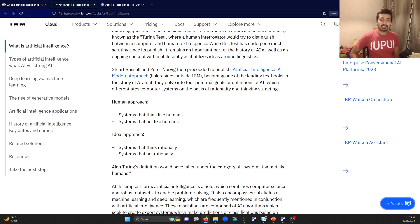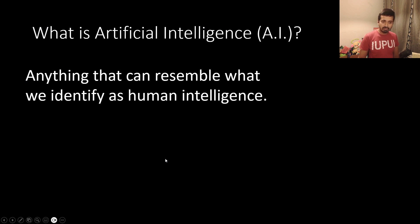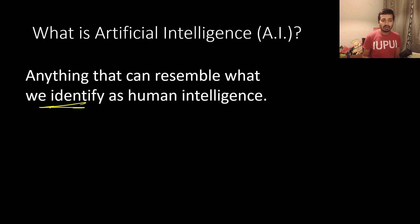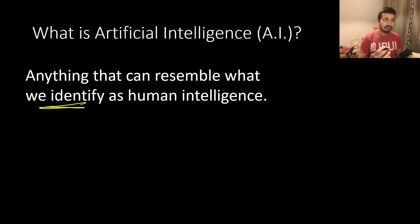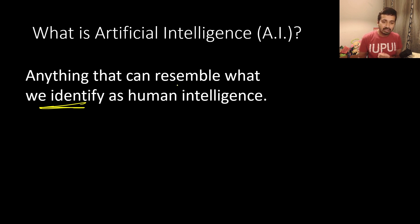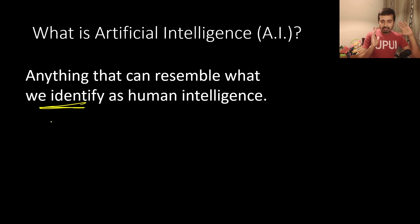We are going to talk about systems that are very complex and subjective. We will talk about the slides and the definition of AI. Anything that can resemble what we identify as human intelligence — so it is very subjective. We can identify and understand the definition of AI in that way.